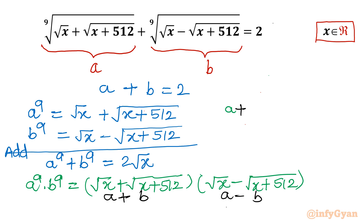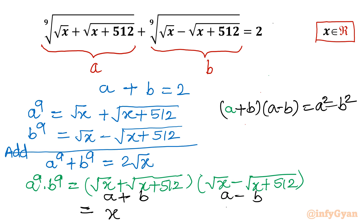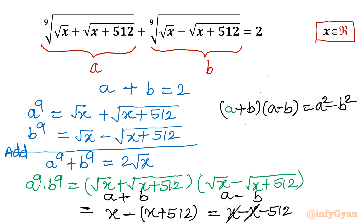Applying the formula: (√x)² minus (√(x+512))² gives x minus (x+512), which simplifies to x minus x minus 512. The x terms cancel, leaving minus 512.